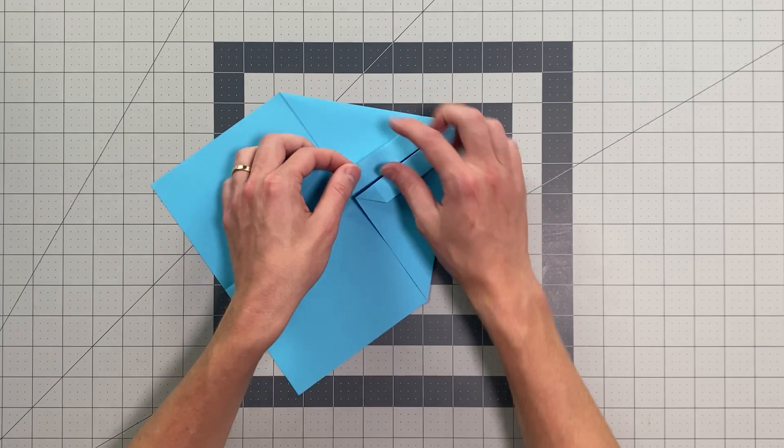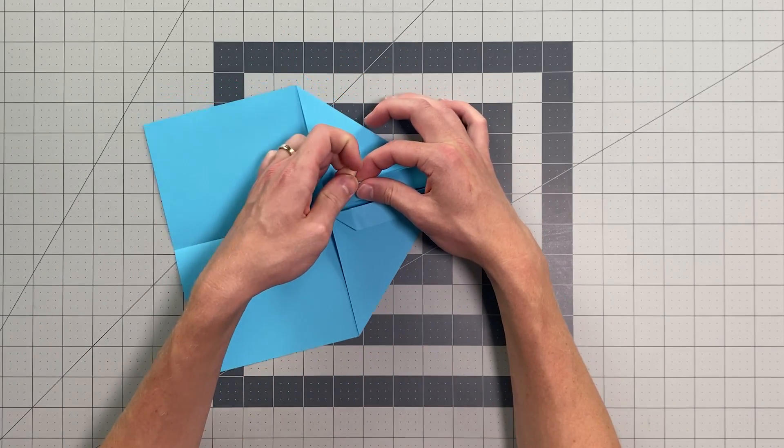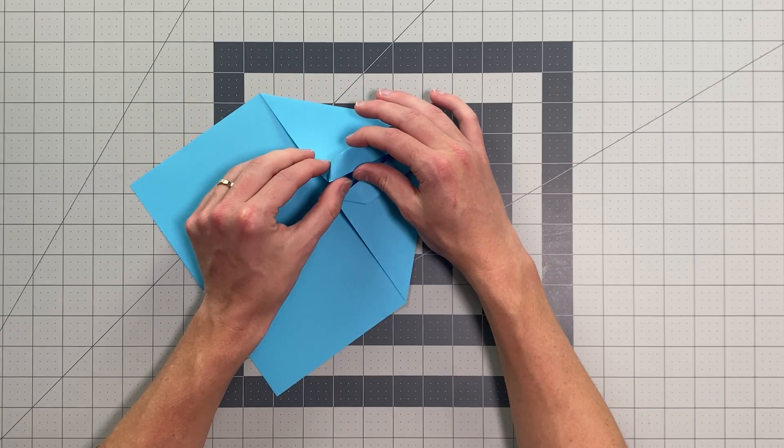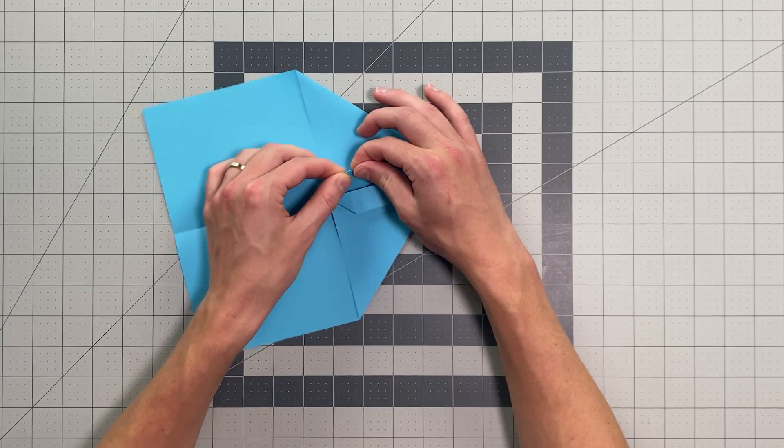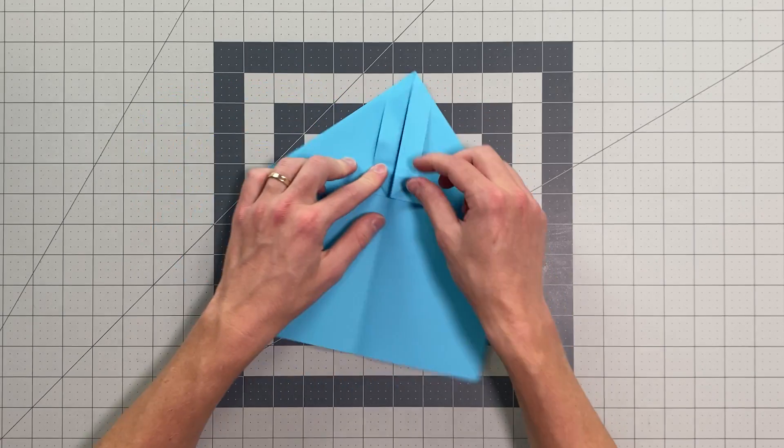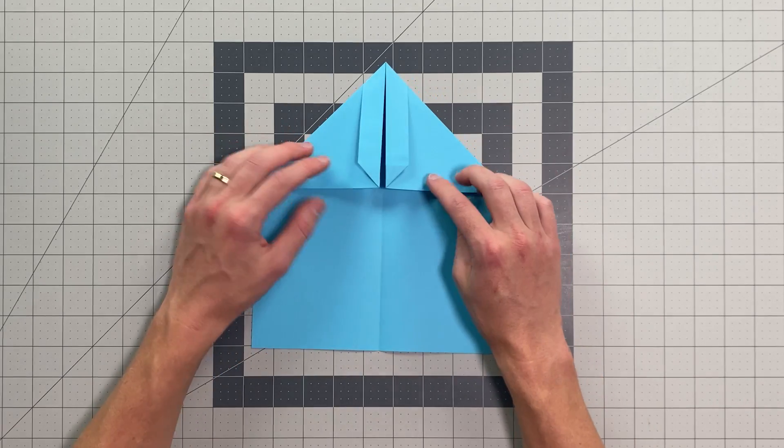And with one side, it can be either side, just reverse the crease you made and tuck this triangle behind the band. Leave the other side just as it is, so it'll look like this.